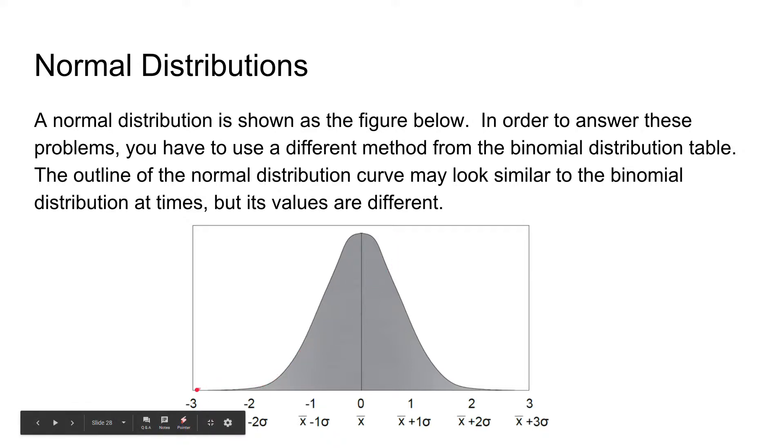On the x axis, we have minus 3 all the way to positive 3. And these values correspond to the standard deviations away from the average. So 1 meaning that a value is 1 standard deviation away from the average, then 2 standard deviations, and 3 standard deviations. As you can see, as the standard deviations increase, the percent of the population at those values also decreases.